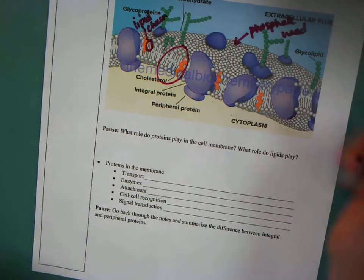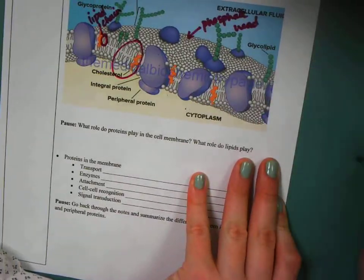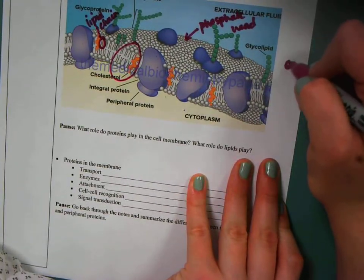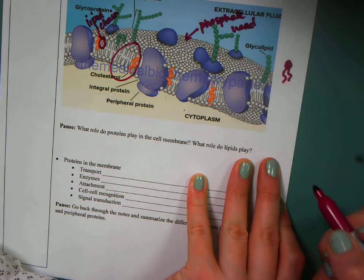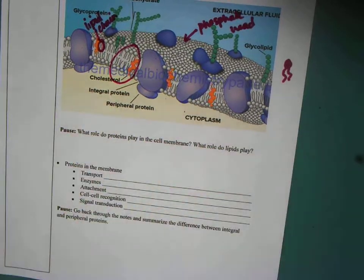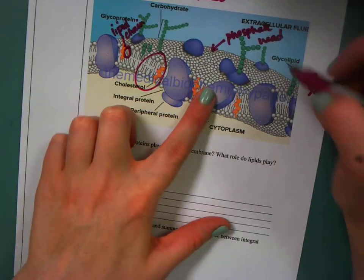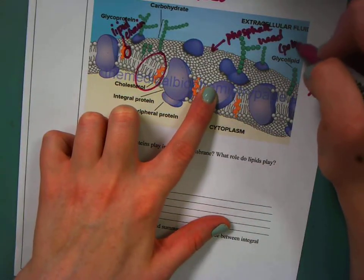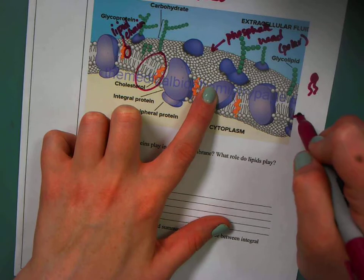So every, I'm just going to kind of draw it for you, we have a little phosphate head, and then we have these lipid tails that are coming off of it. And this is important because the phosphates are polar, and the lipids we know are nonpolar.